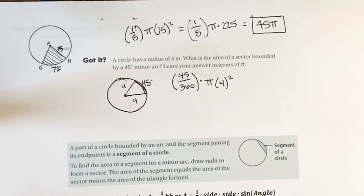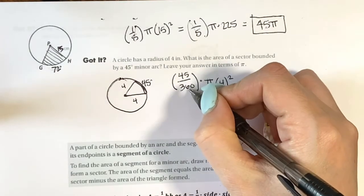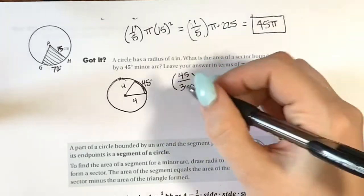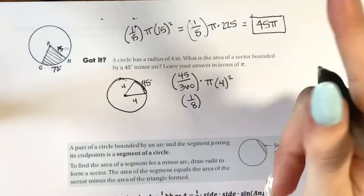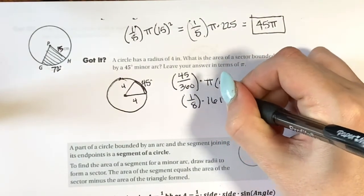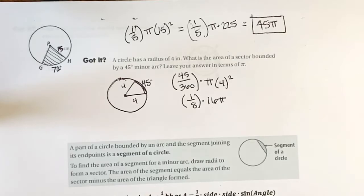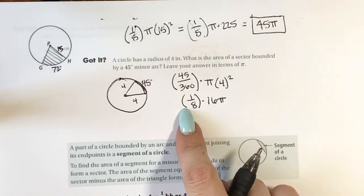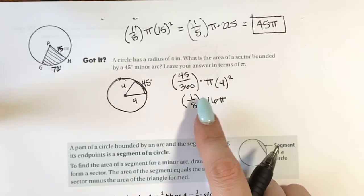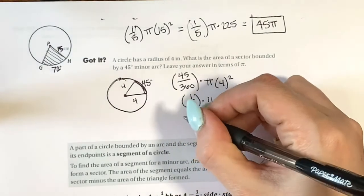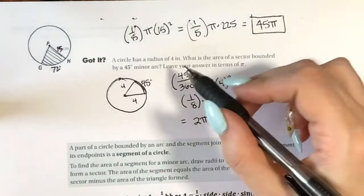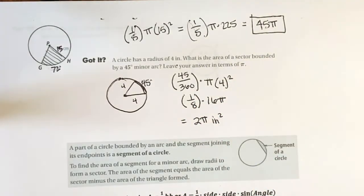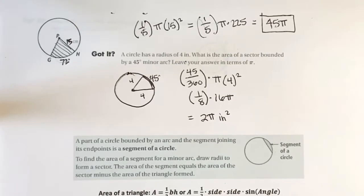45 and 360 can be reduced: 45 goes into 360 eight times, so this reduces to one-eighth. Then 4 squared is 16, giving us one-eighth times 16π. One-eighth times 16 is like doing 16 divided by 8, which is 2. So this equals 2π. The units were inches, so the answer is 2π inches squared.